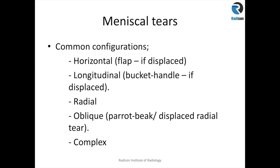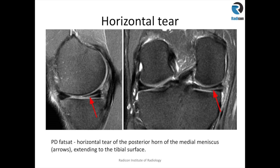This is an example of a horizontal tear where you can see signal change at the posterior horn of the medial meniscus reaching the articular surface, which is inferior or tibial. This is a classic example of a horizontal tear, which is most of the time a degenerative type tear.